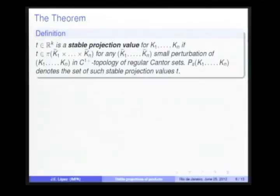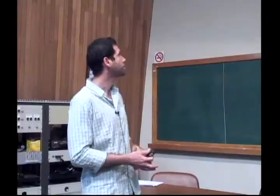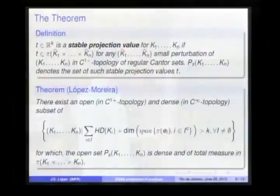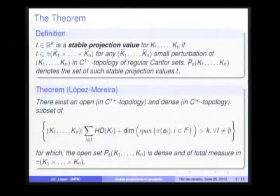We define a stable projection value. A parameter T from ℝᵏ is a stable projection value for an n-tuple of regular Cantor sets. And the main result is the following: There is an open and dense subset of n-tuples of regular Cantor sets satisfying the 2ⁿ minus 1 conditions for which the open set of stable projection values is dense and of total measure in the projection of the Cartesian product.